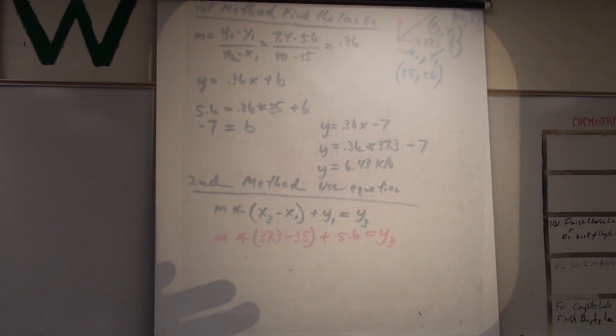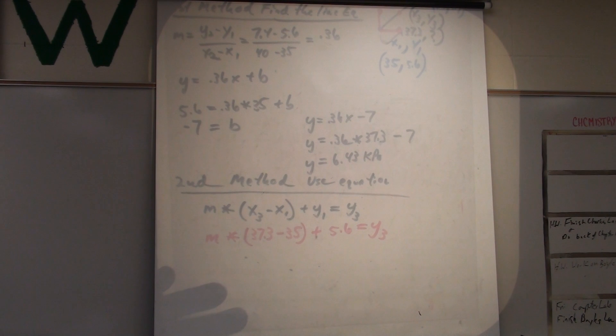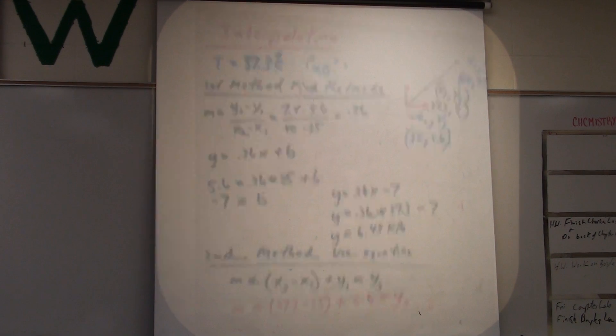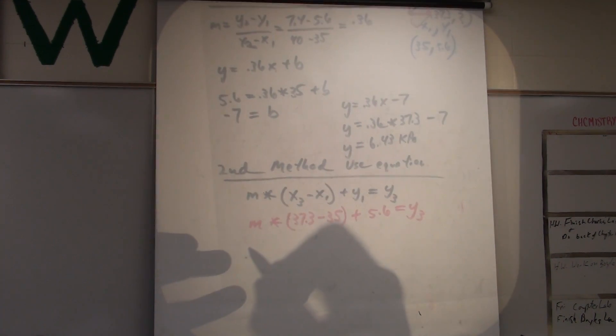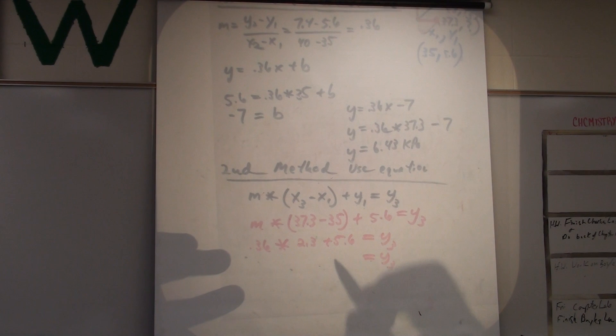You still have to calculate your slope. So, you would still have to do this first part up here. Find your slope. So, 0.36 times the difference is 2.3 plus 5.6 equals Y3. You'll get the same answer.